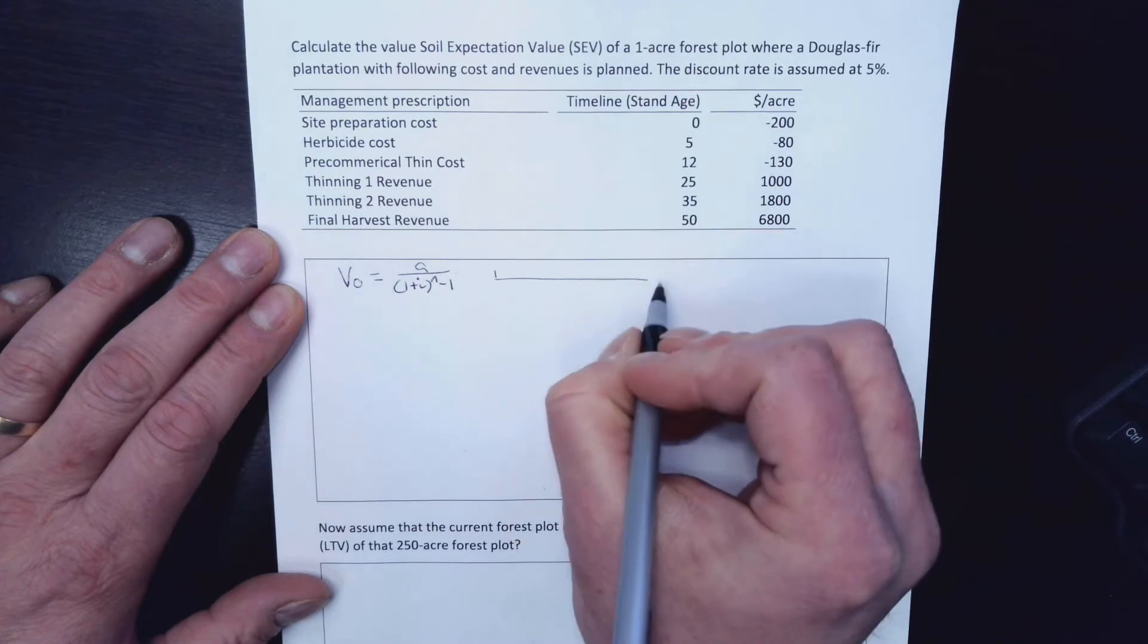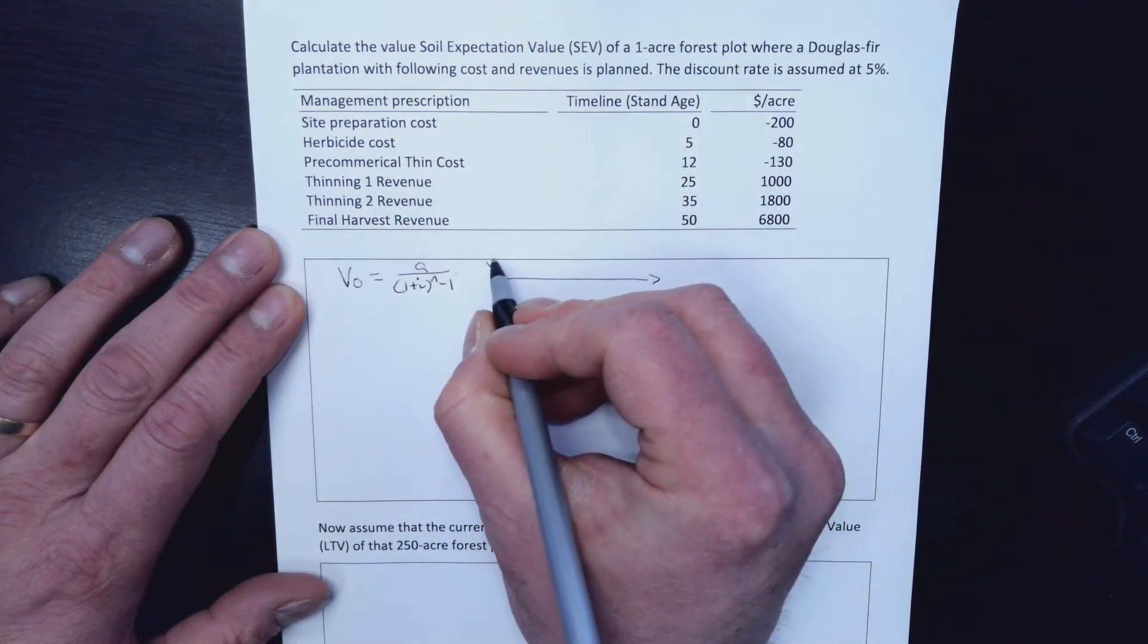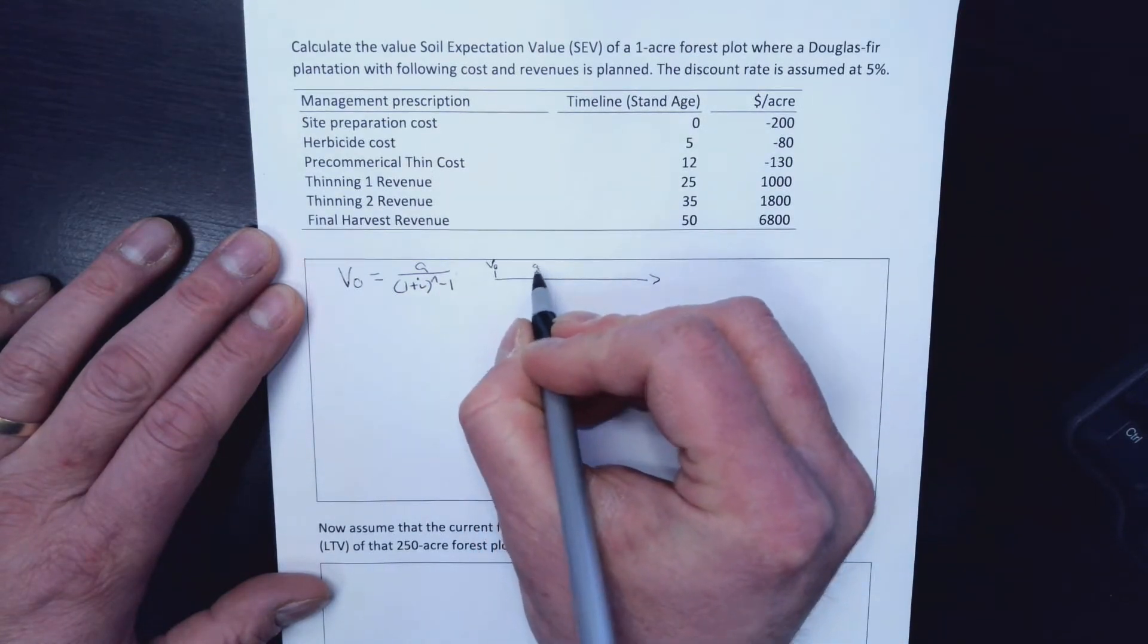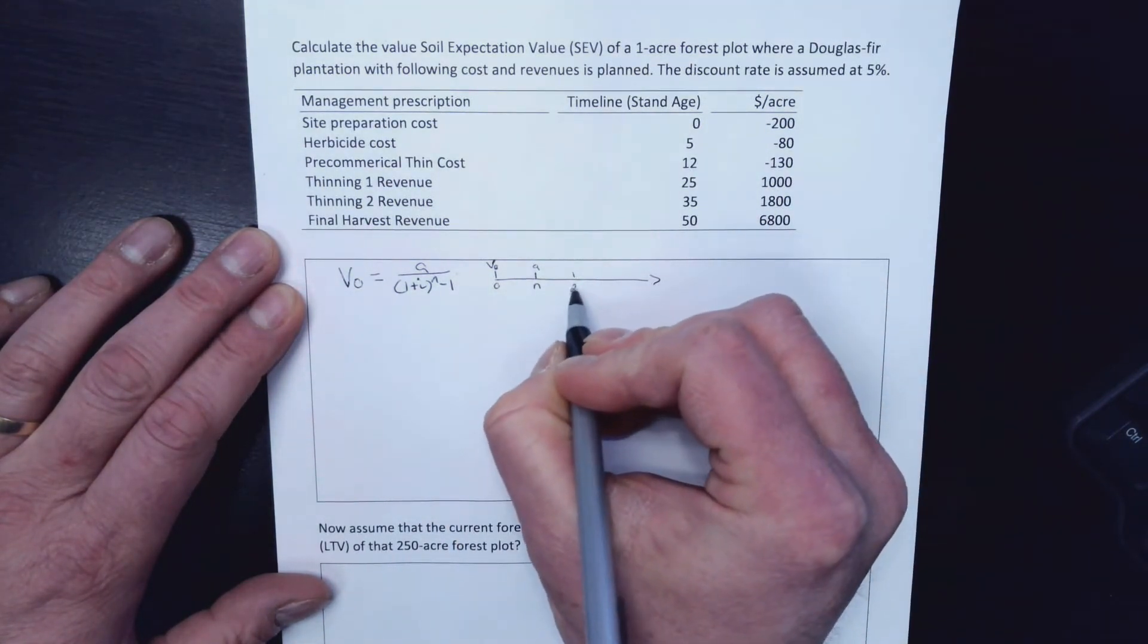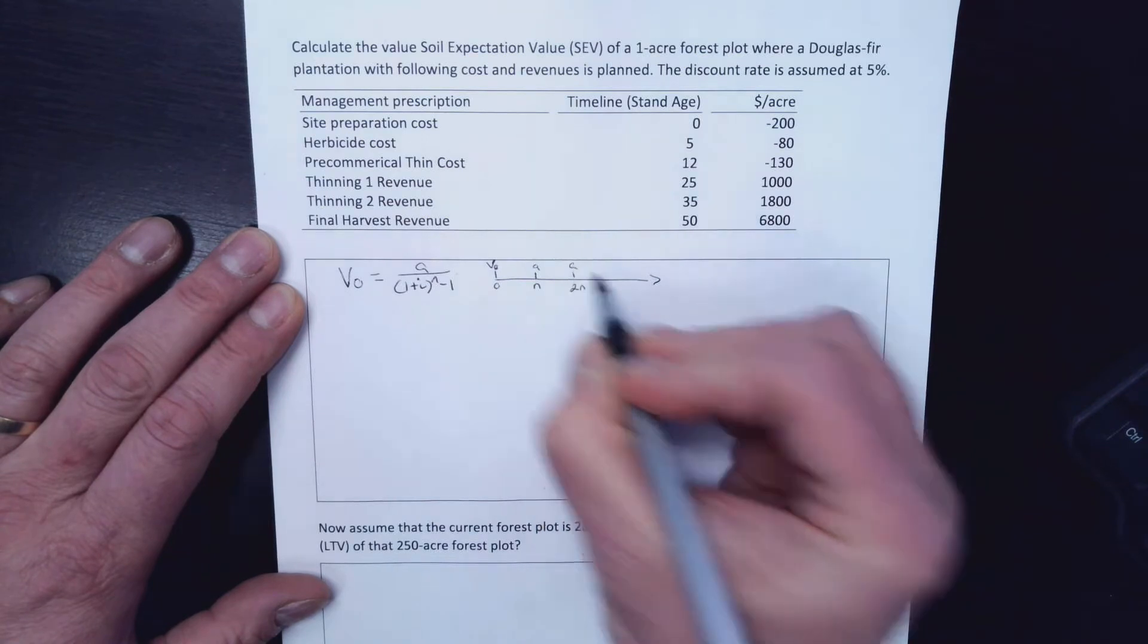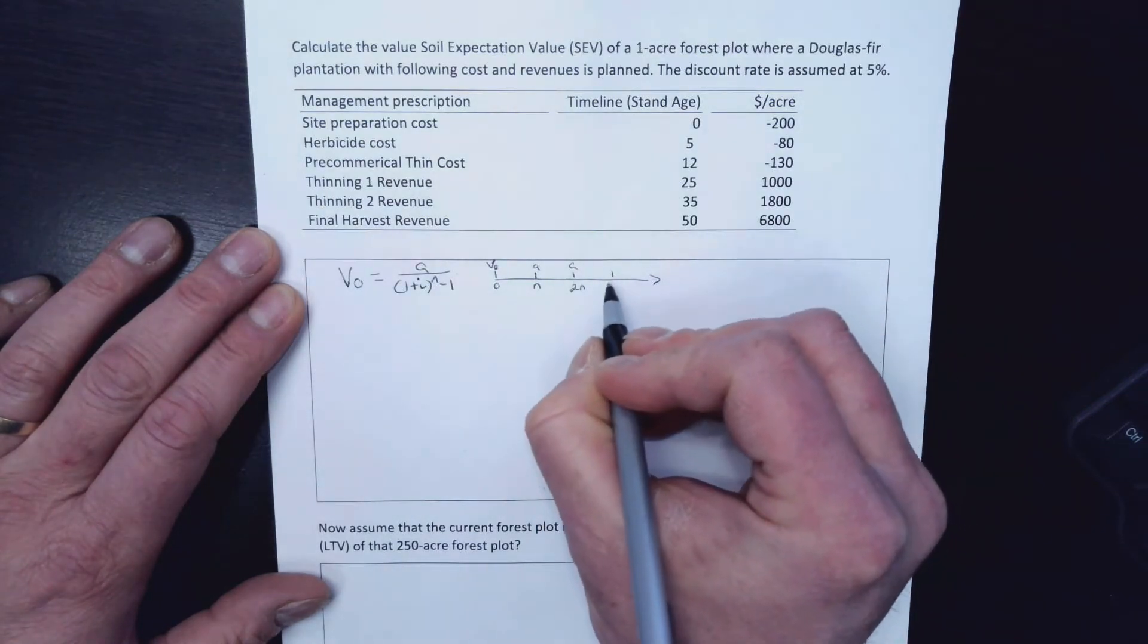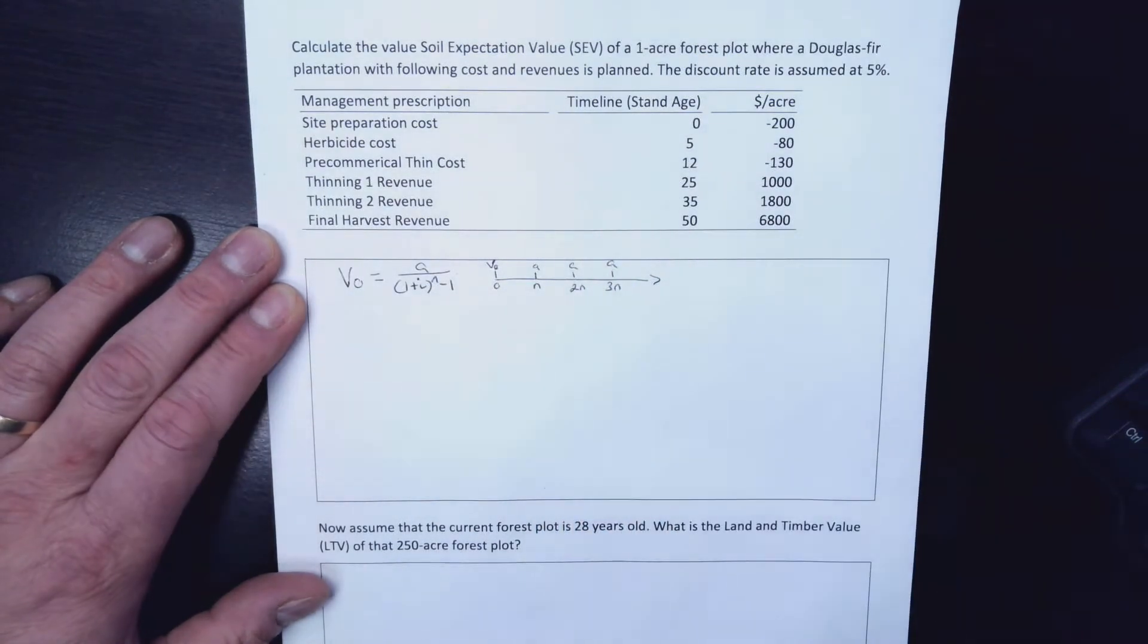So that looks like this essentially. This is the V₀. So there's our A, N years out in the future. And 2N, we have another A. And 3N, we have another A.